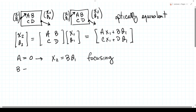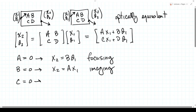What if B were equal to zero? Then x2 would equal A·x1, meaning all rays that come from a certain point at the input converge at a certain point at the output. A system that does that we call an imaging system. If C is equal to zero, then theta2 equals D·theta1 — output angle is proportional to input angle. A system with that behavior achieves angular magnification.